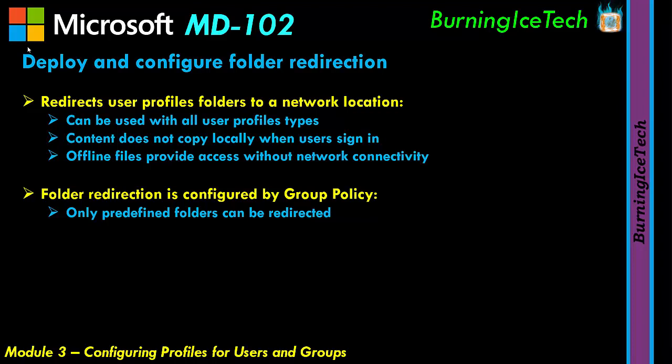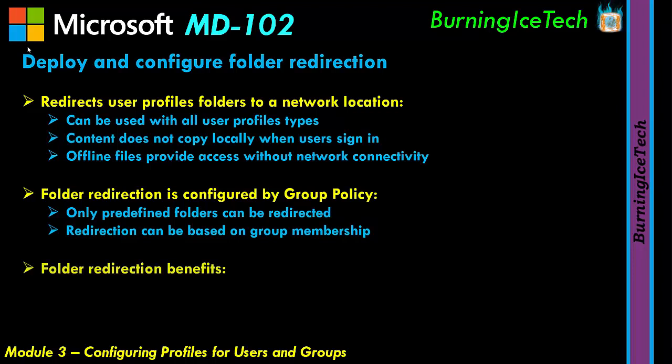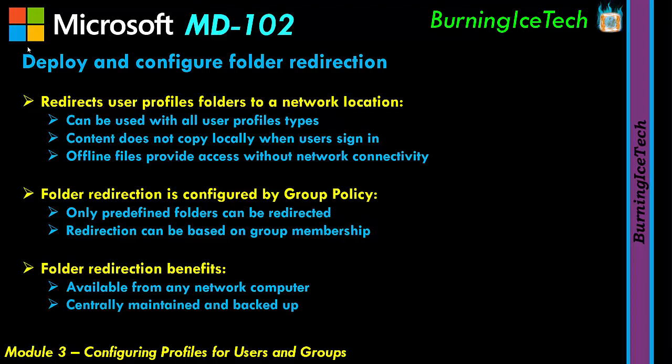Redirection can also be based on group membership — you can configure a group policy so that joining someone to a certain group automatically applies folder redirection. Benefits include data being available from any network computer, centrally maintained and backed up. You can back up one central server and everything is covered. You can also set quotas and configure different permissions as needed.